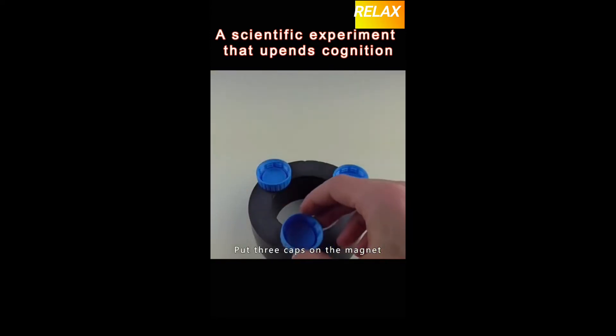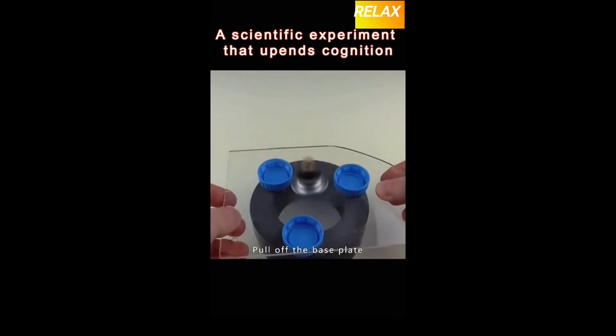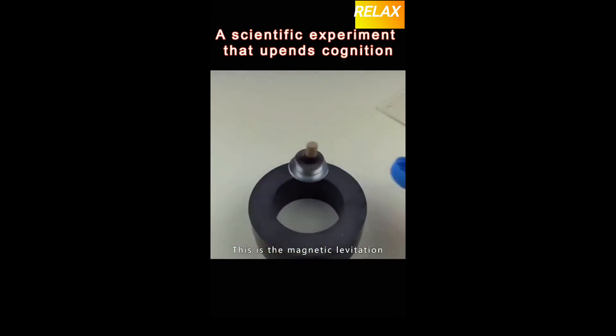Put three caps on the magnet. Spin a top on the glass. Pull off the base plate. The top was spinning in the air. This is the magnetic levitation.